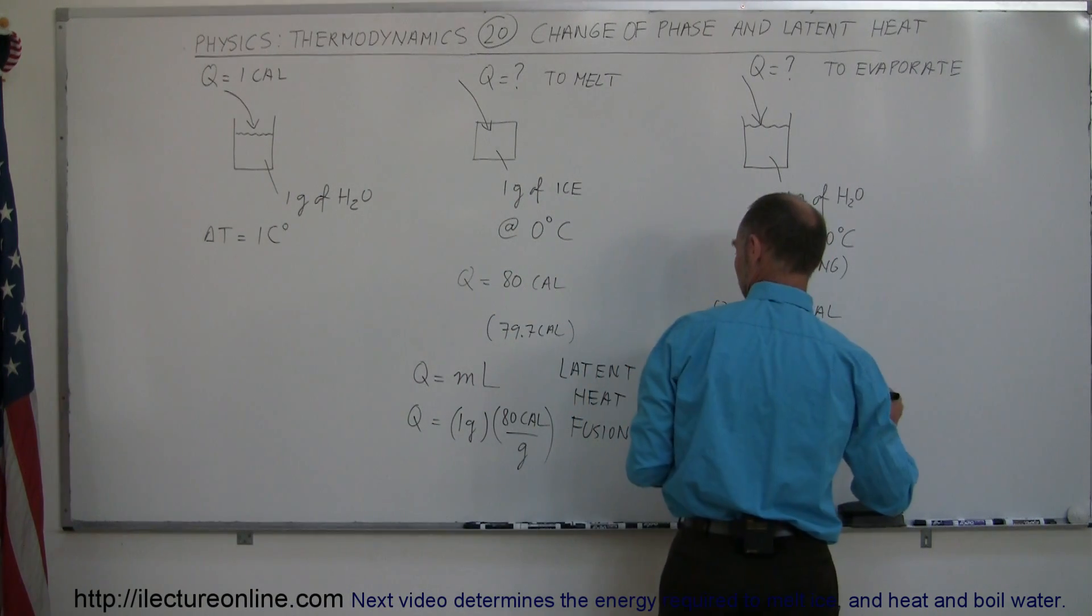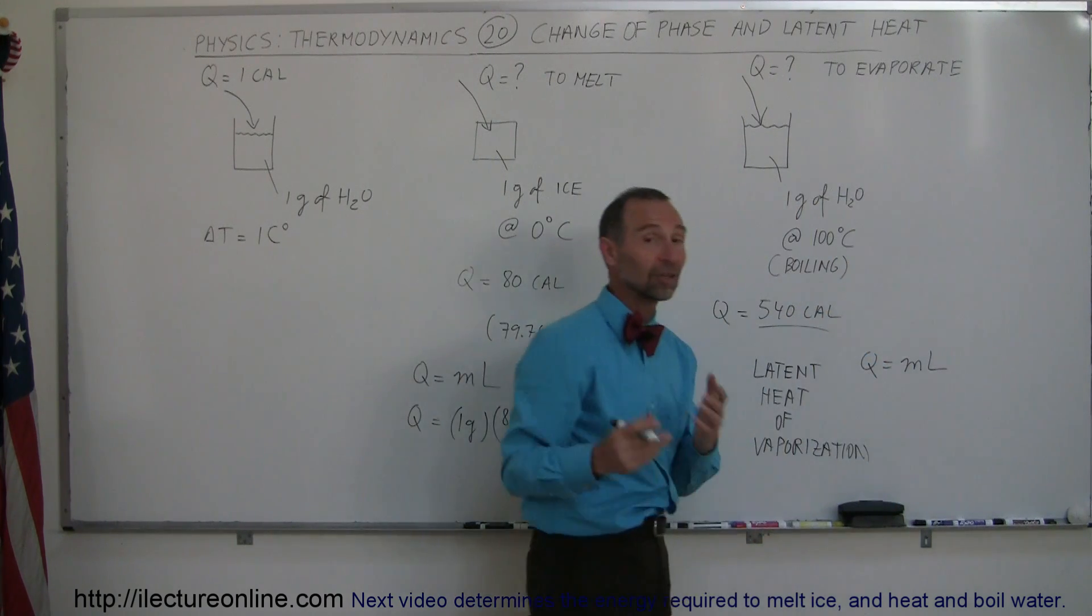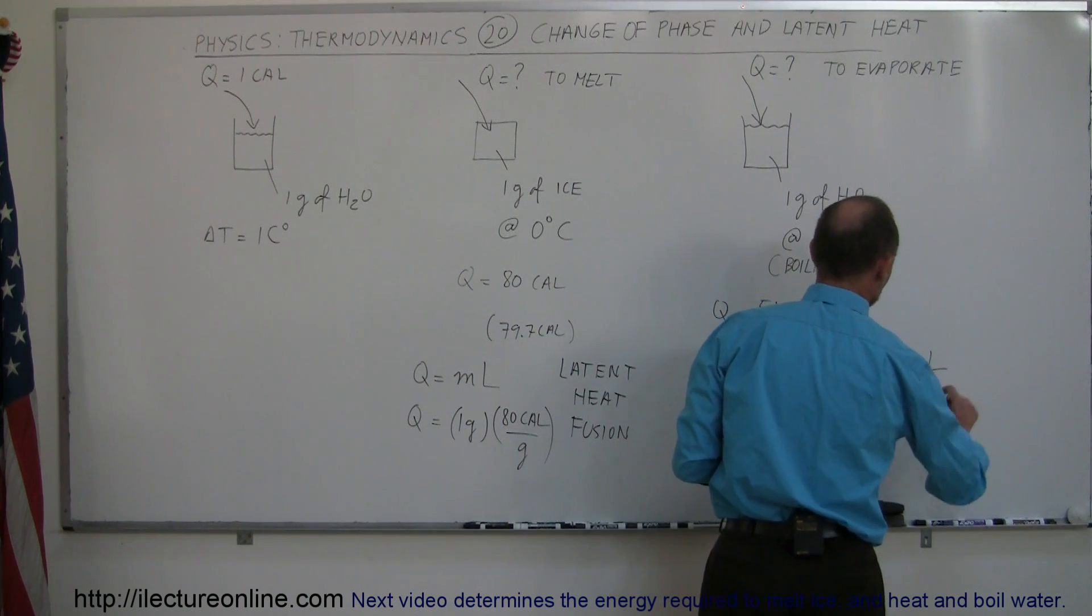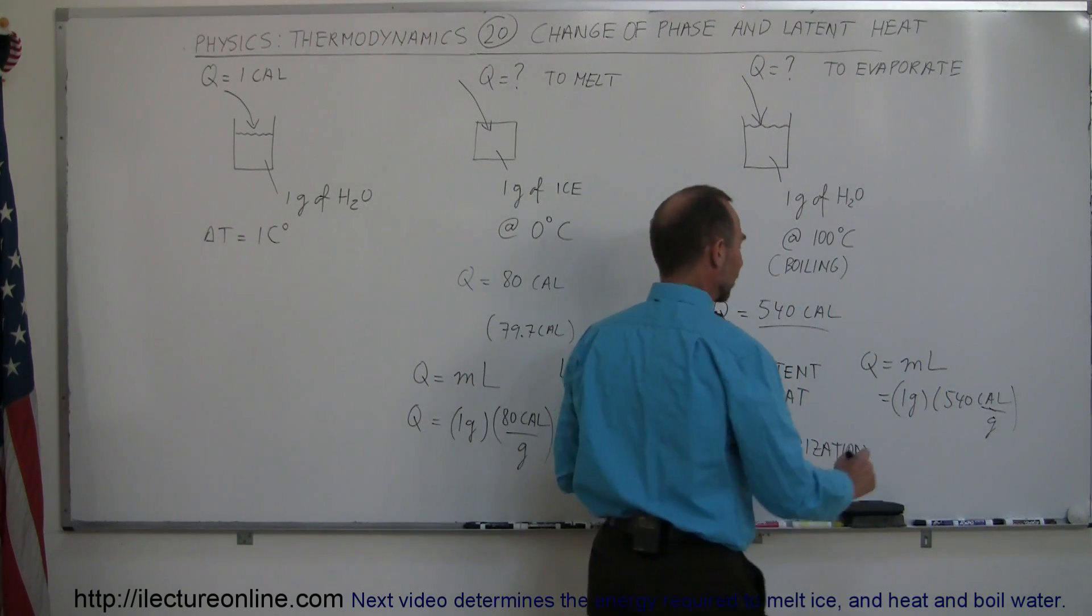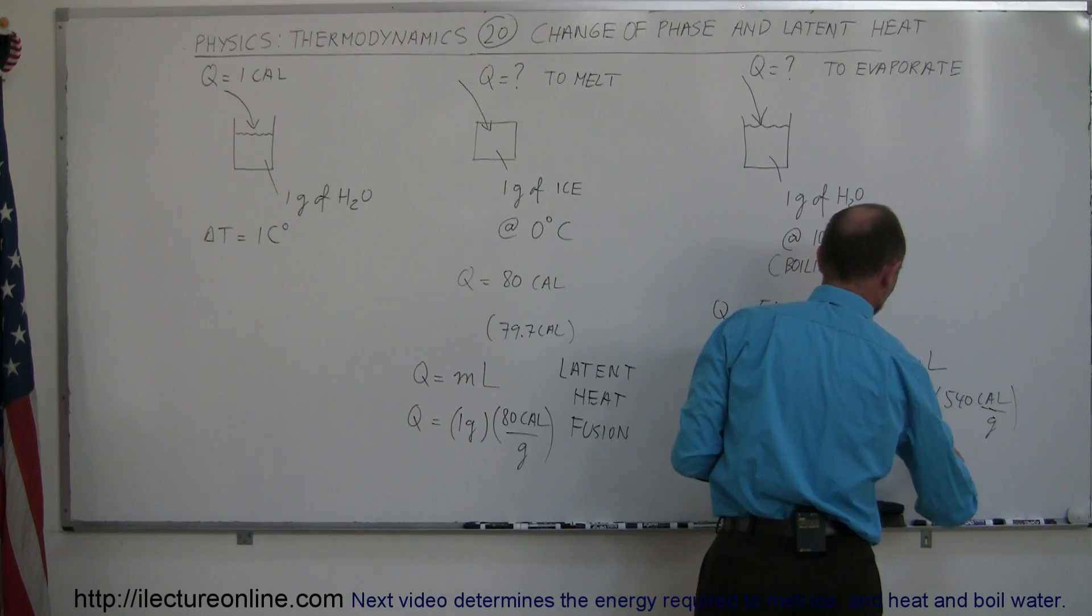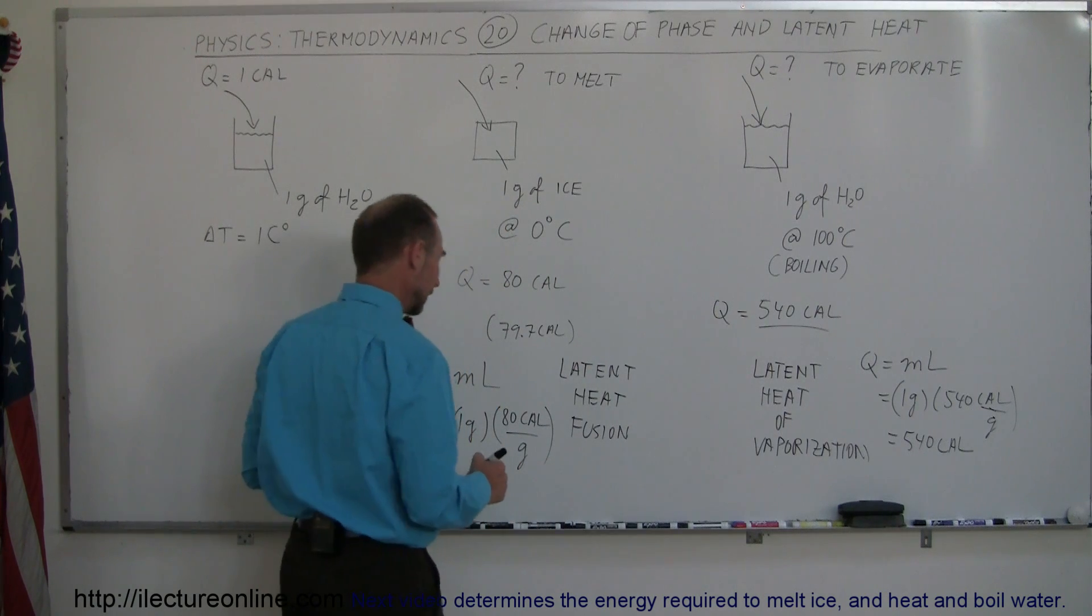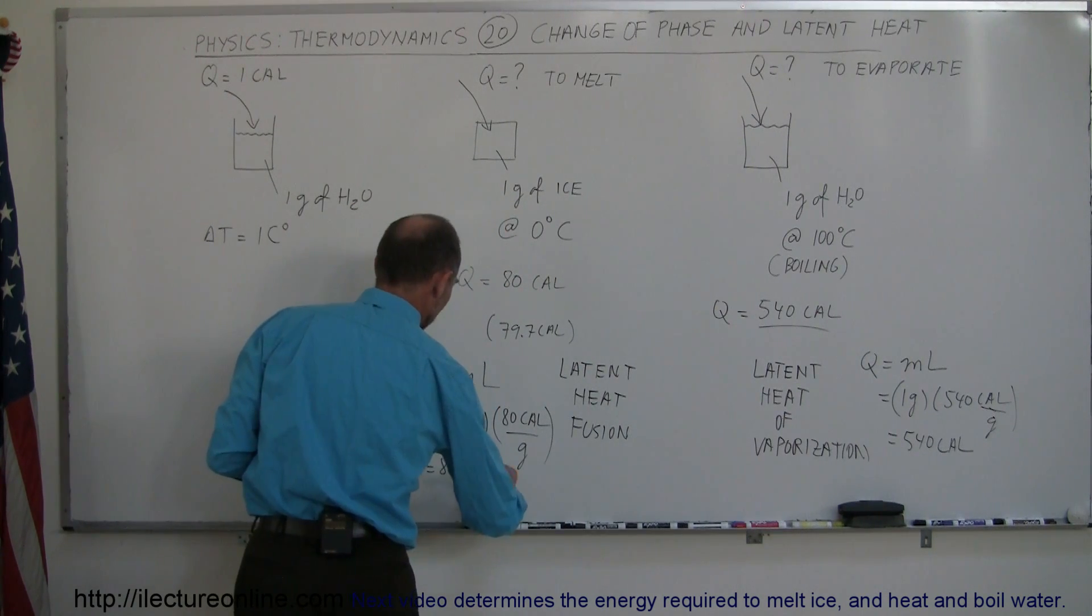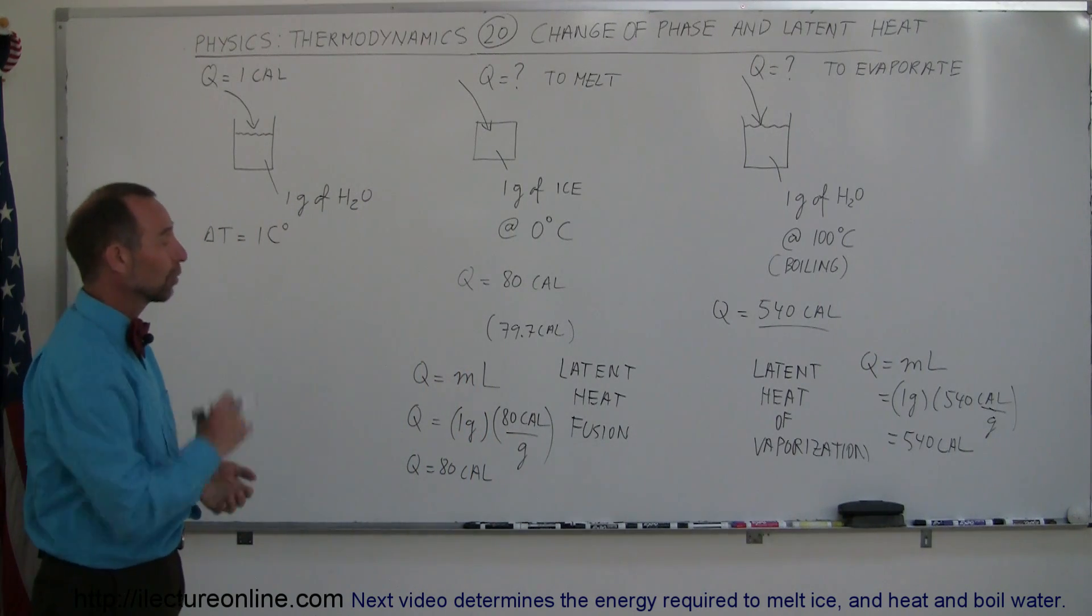For this change in phase, Q equals M times L. In this case, L is the latent heat of vaporization, which equals 1 gram times 540 calories per gram. The grams cancel out, you're left with calories. This would be 540 calories required to change 1 gram of boiling water to gas phase, and Q would be equal to 80 calories required to take 1 gram of ice at 0 degrees centigrade and turn it completely into liquid.